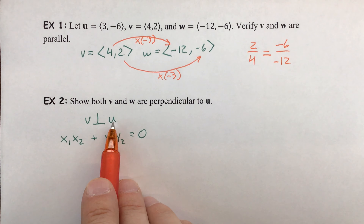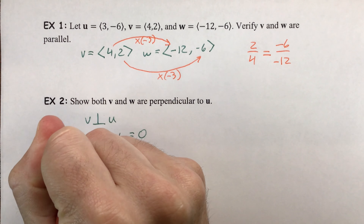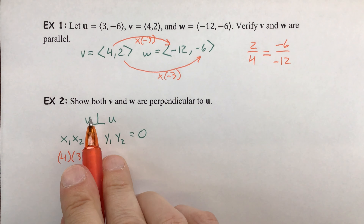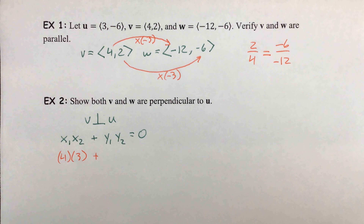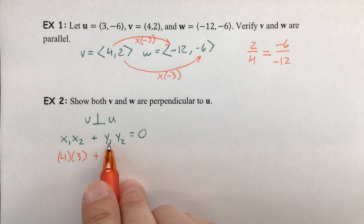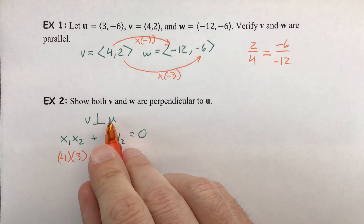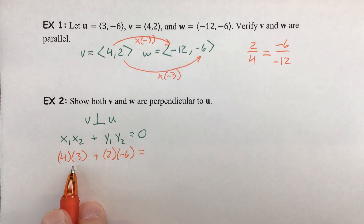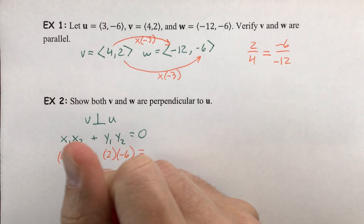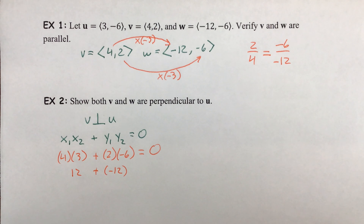For v and u: the x-components are 4 and 3, so we have 4 times 3. From v that's the 4, from u that's the 3. We add that to the y-component of v, which is 2, multiplied by the y-component of u, which is -6. Looking at this, you get 12 plus negative 12, which does in fact equal 0 — meaning these two vectors are perpendicular to each other.